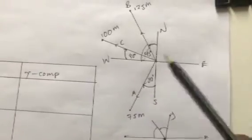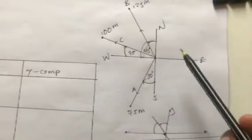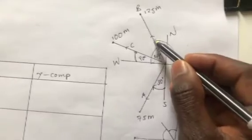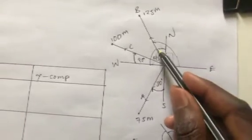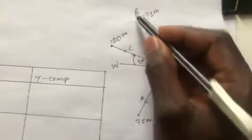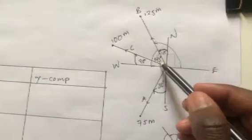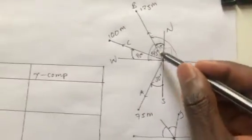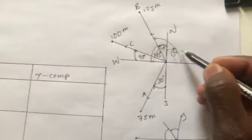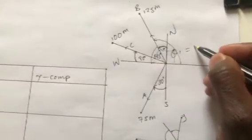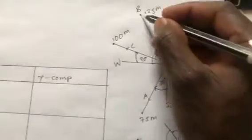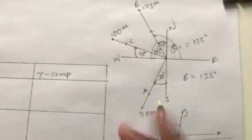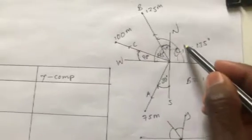Moving anticlockwise from the positive x-axis: Vector B points northwest, so its angle is 90 degrees plus 45 degrees, giving 135 degrees. That is the actual angle for vector B — 135 degrees.